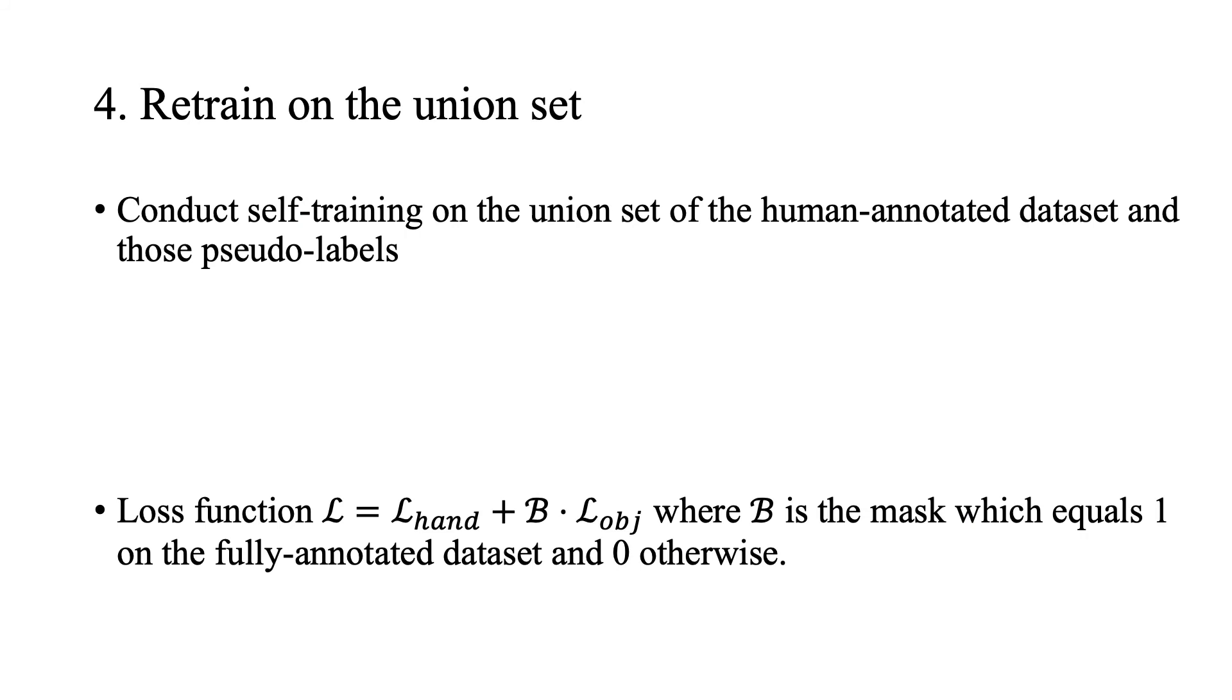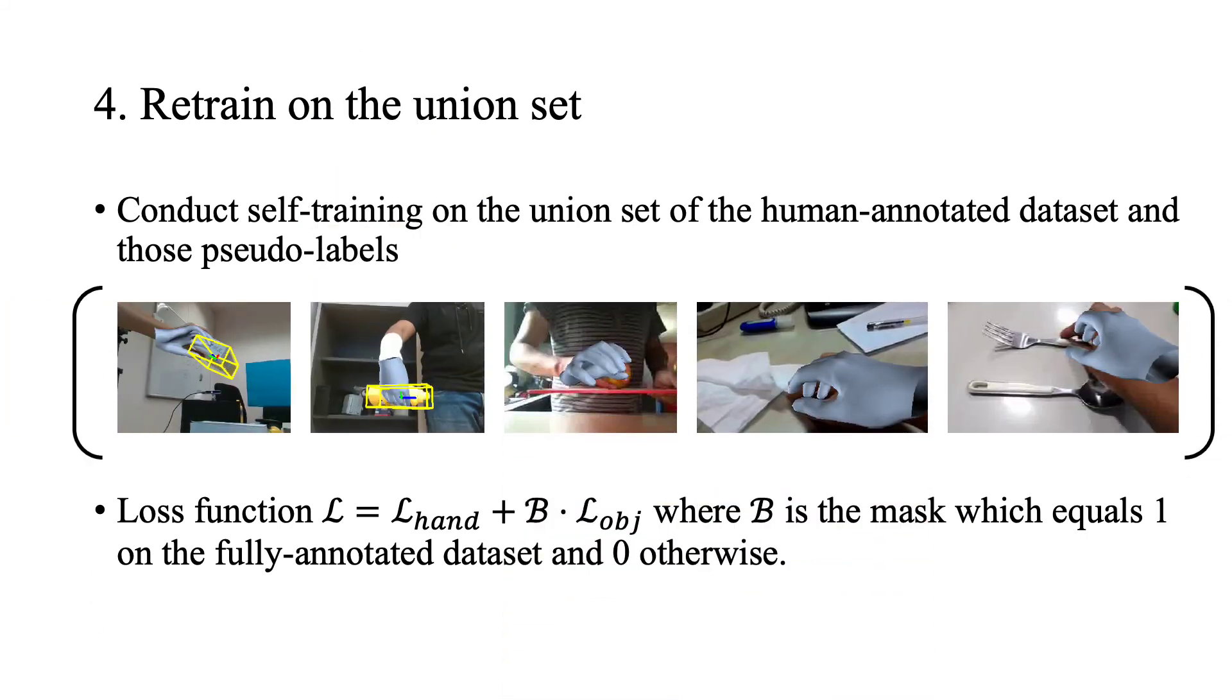Finally, we conduct self-training on a union set of the annotated dataset and those pseudo-labels. The diversity of hand pseudo-labels not only improves hand prediction but also provides richer context for hand-object interaction reasoning via the contextual reasoning module, leading to better object pose estimation.